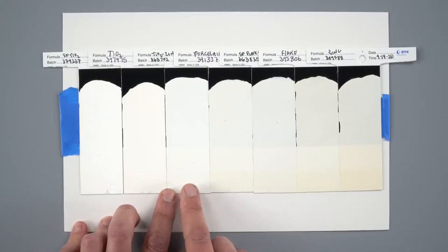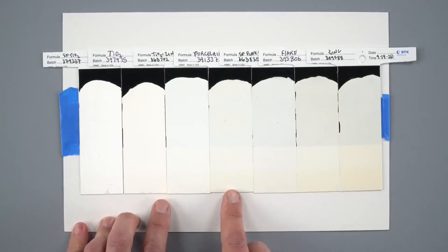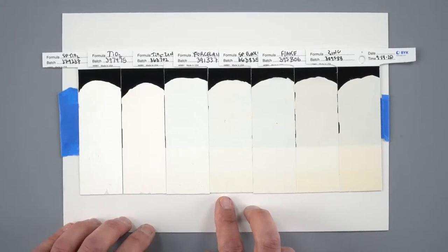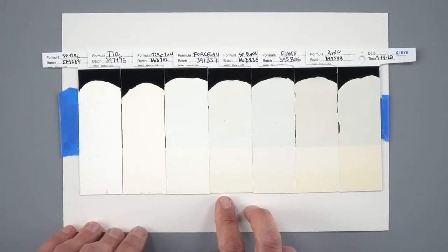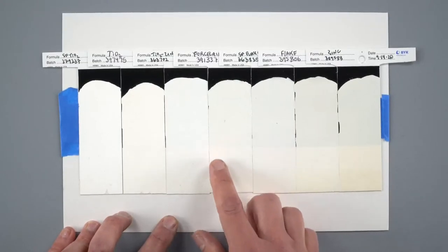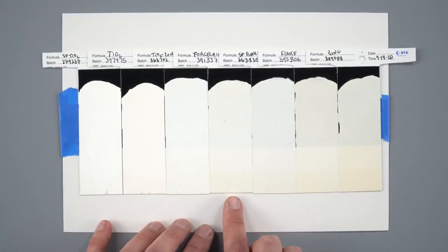We'll talk about the drawbacks of zinc here in just a moment. Porcelain white is a unique pigment called lithopone. It's a co-pigment of barium sulfate and zinc sulfide. It has some level of translucency to it and medium tinting strength.